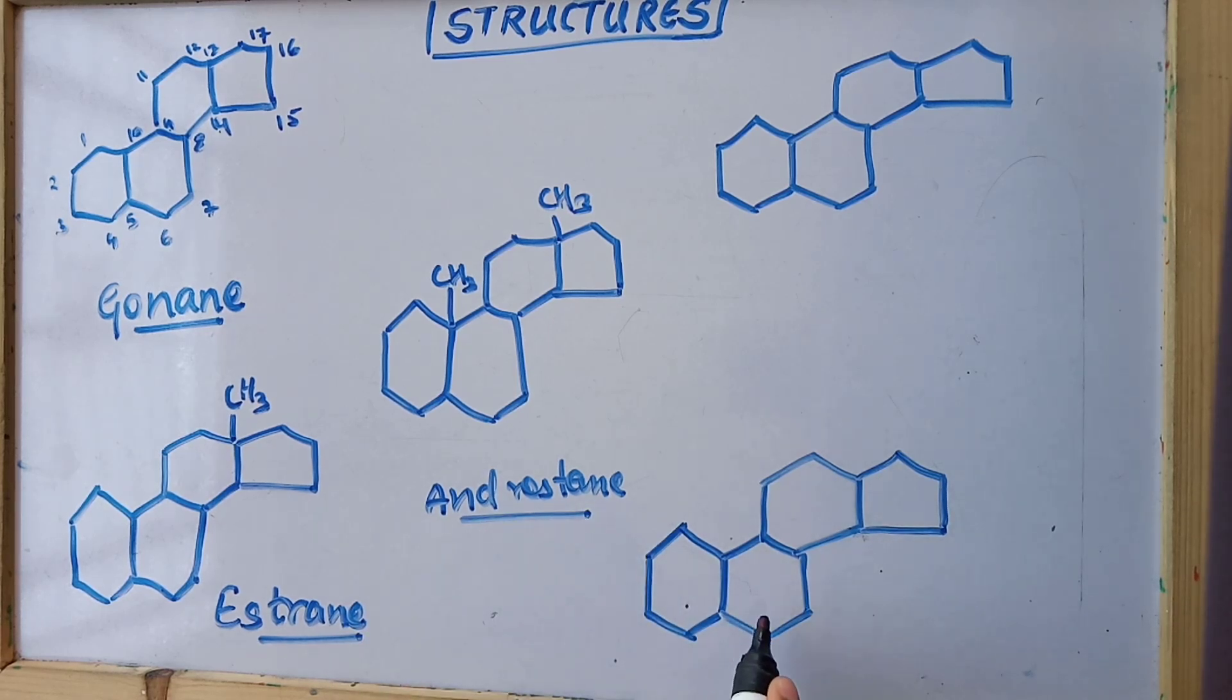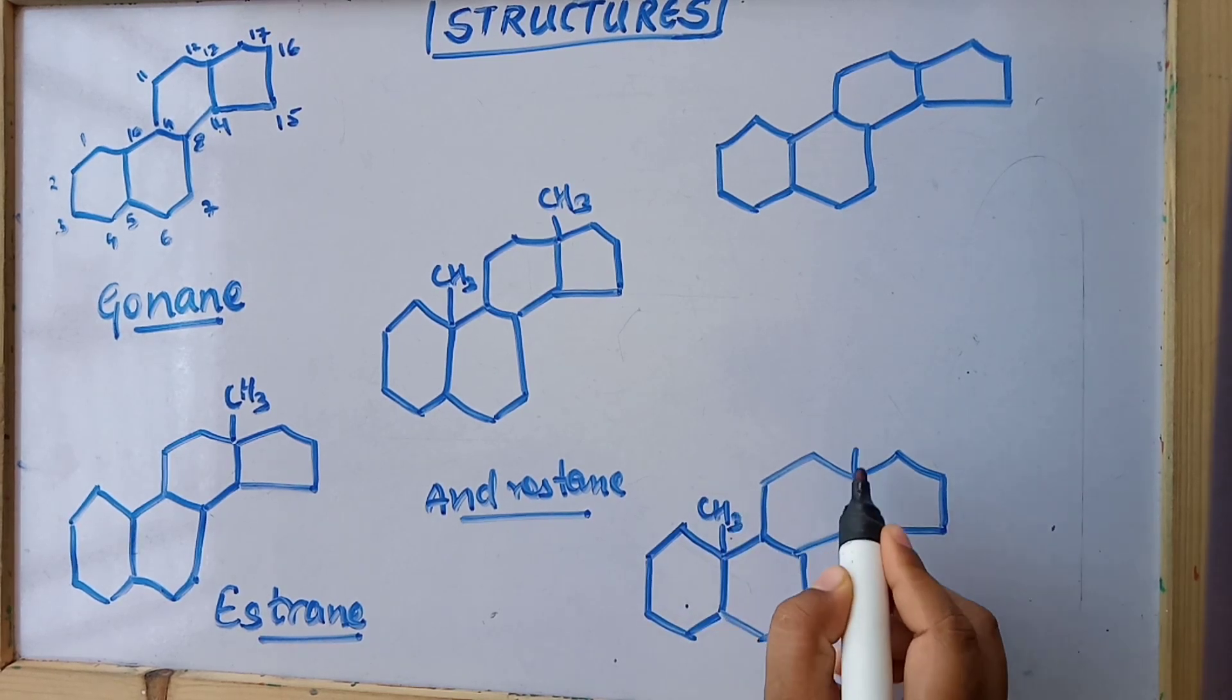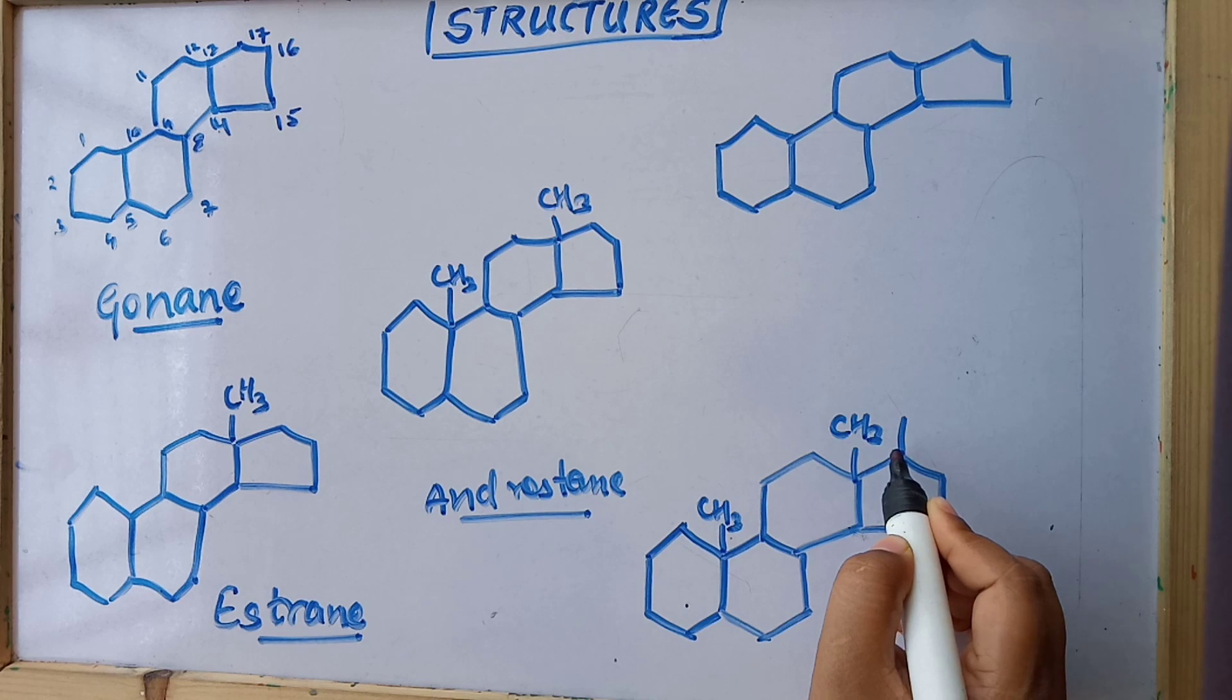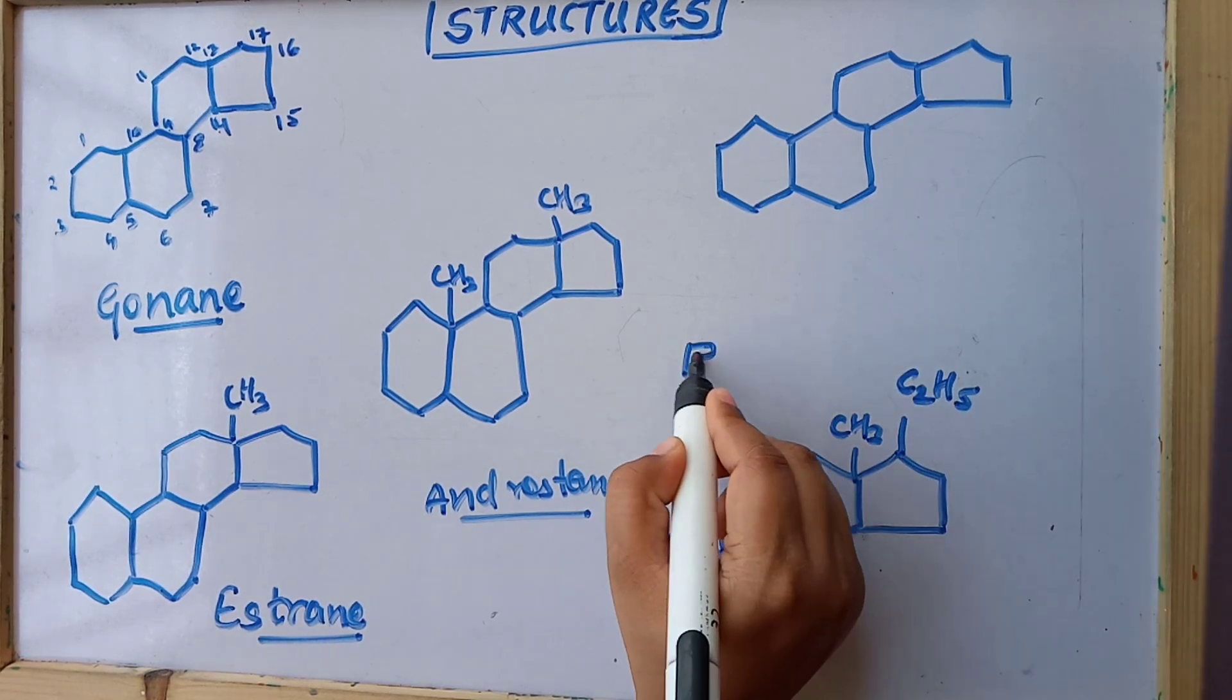This is known as pregnane. If we place CH3 and CH3, and over here at the 17th place we place C2H5, it becomes pregnane.